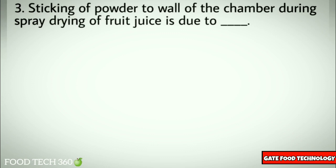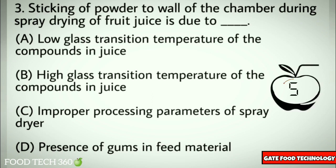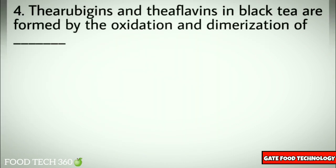Question number three: Sticking of powder to the wall of the chamber during spray drying of fruit juice is due to — options: A) low glass transition temperature of the compounds in juice, B) high glass transition temperature of the compounds in juice, C) improper processing parameters of spray dryer, D) presence of gums in feed material.